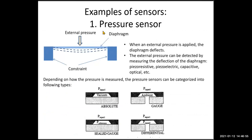The first example is a pressure sensor, which measures pressure. As shown in this figure, a pressure sensor is simply a diaphragm supported by some type of constraint. When an external pressure is applied from the top surface, the diaphragm deflects. The external pressure can be detected by measuring the deflection of the diaphragm, which can be done using piezo-resistive, piezoelectric, capacitive, optical, or other sensing mechanisms. The measurement of pressure is thus converted to measurement of diaphragm deflection or displacement.